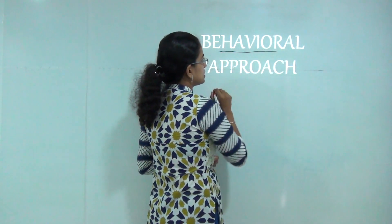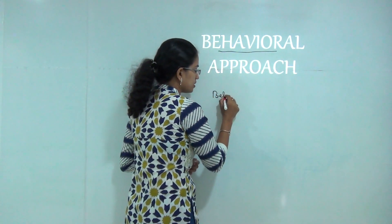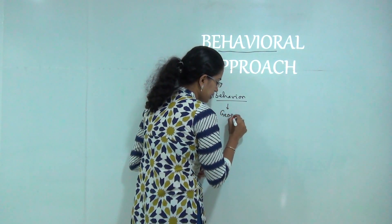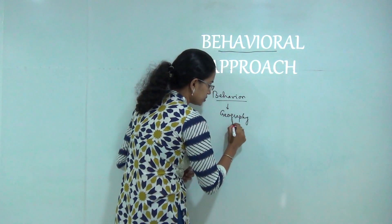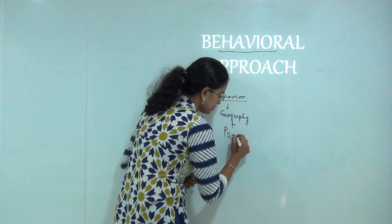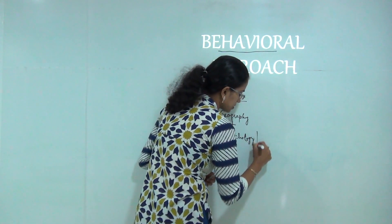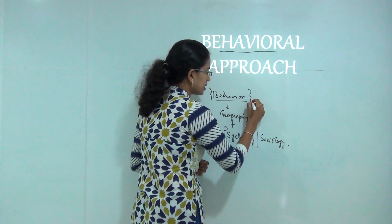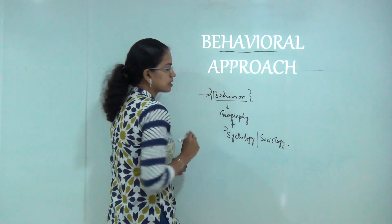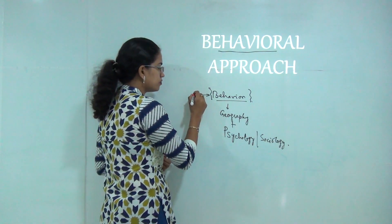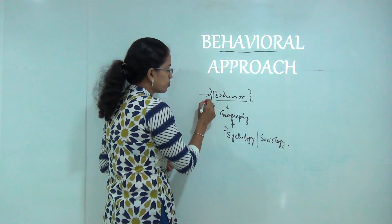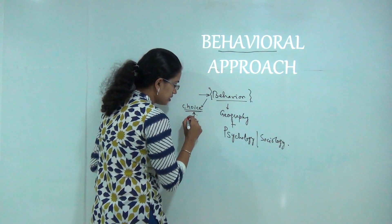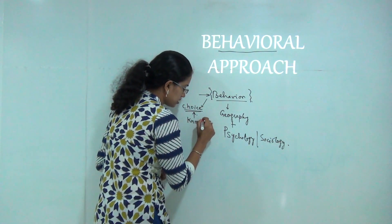Behavioral approach, as the name suggests, deals with behavior. It does not include just the component of geography but also includes the component of psychology and aspects of sociology. We understand human being as a dynamic person whose behavior influences his actions. People make choices and those choices are governed by the pre-owned knowledge that the person has.